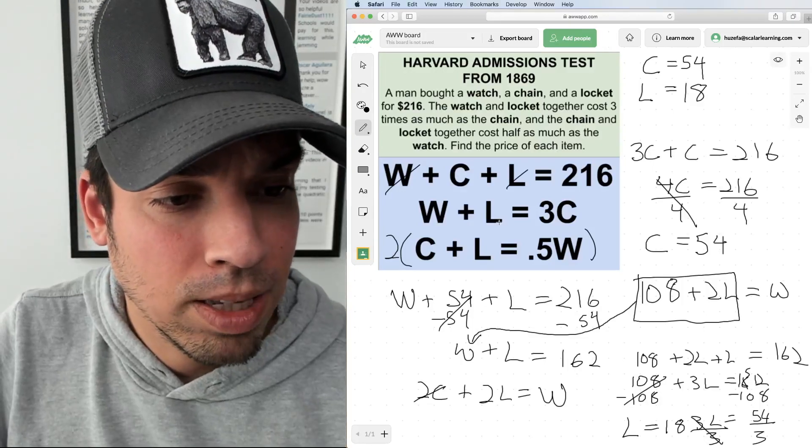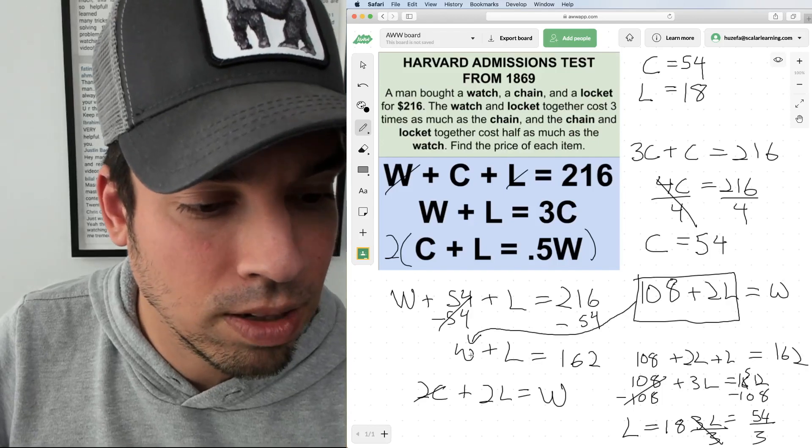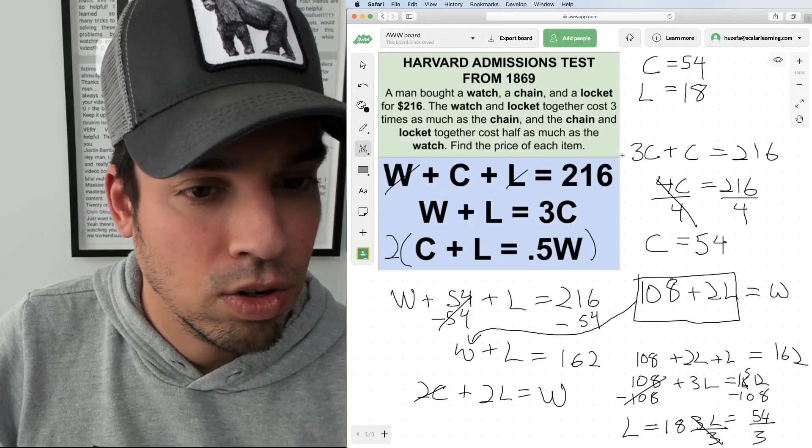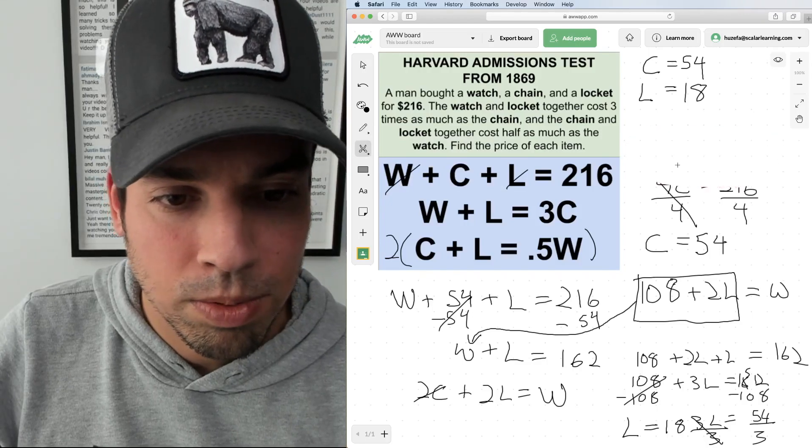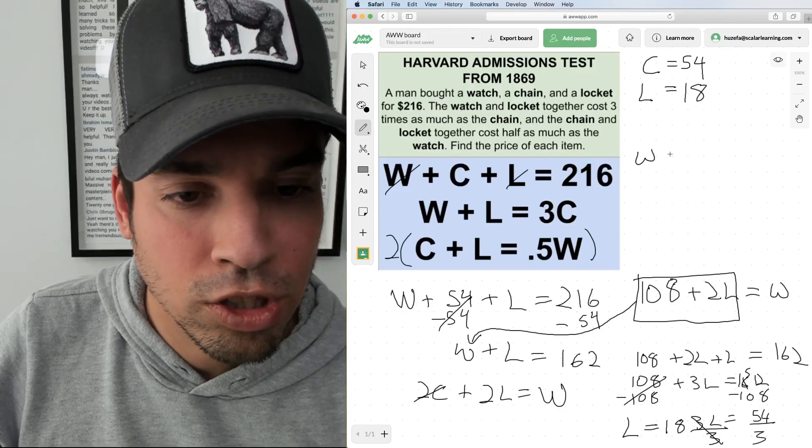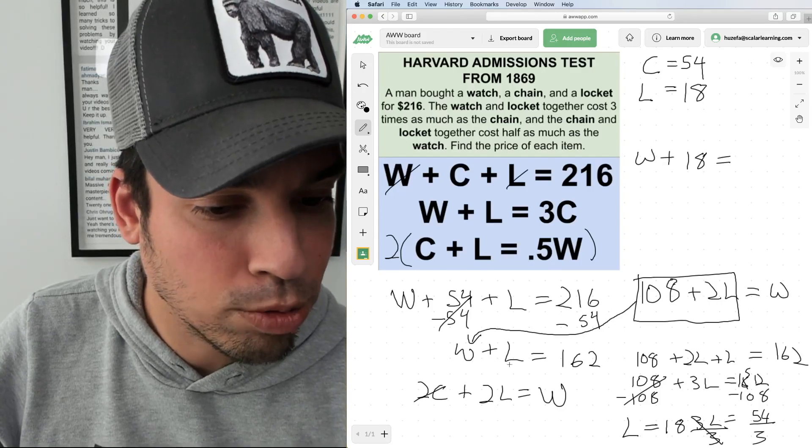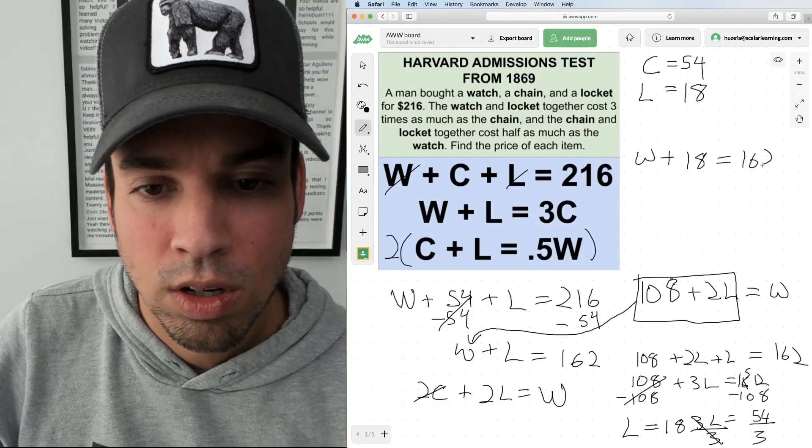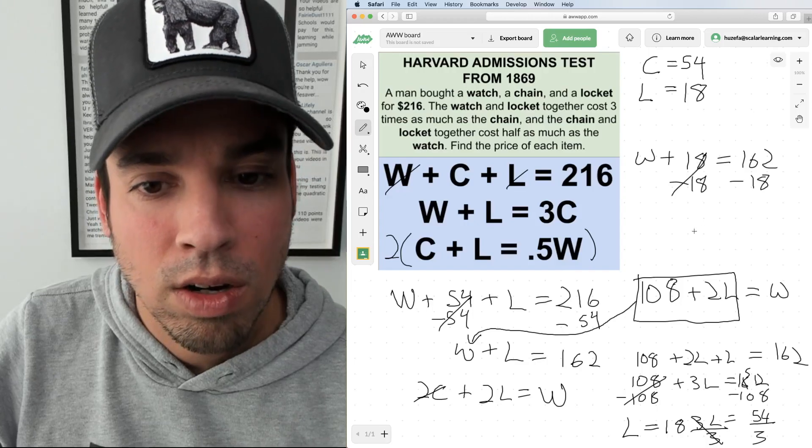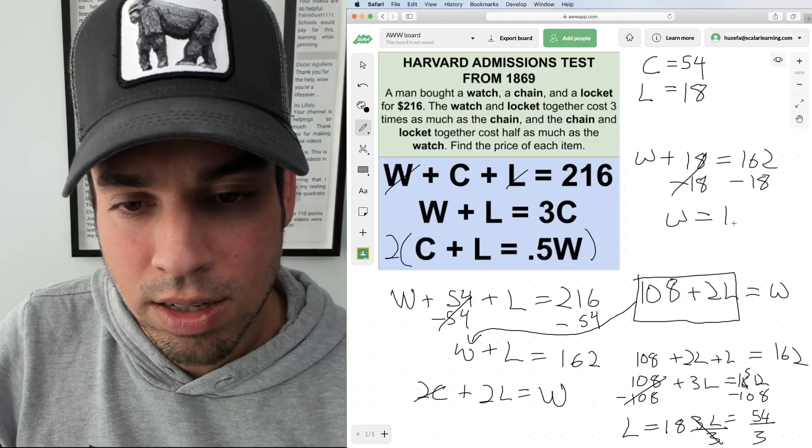Now we got a lot of options, but let's go with this equation right here. This is going to be our best option. I know that the value of the watch is unknown, my value of the locket is now 18, and the two added together, watch plus locket, equals 162. Solve for watch: subtract 18, and watch equals 144.